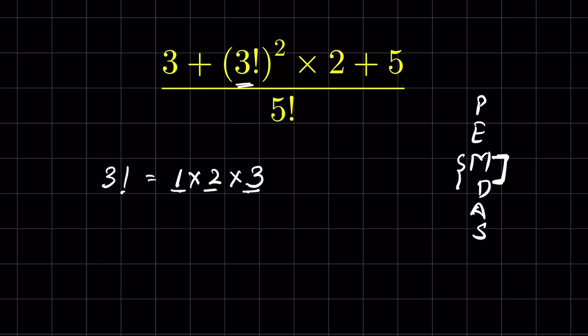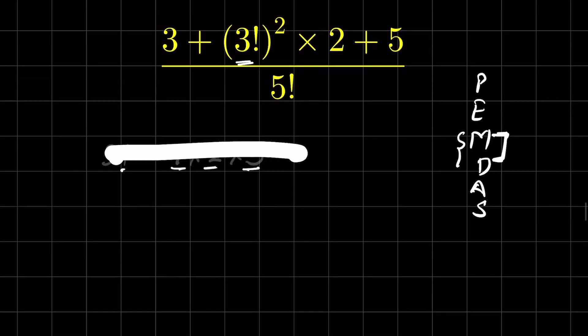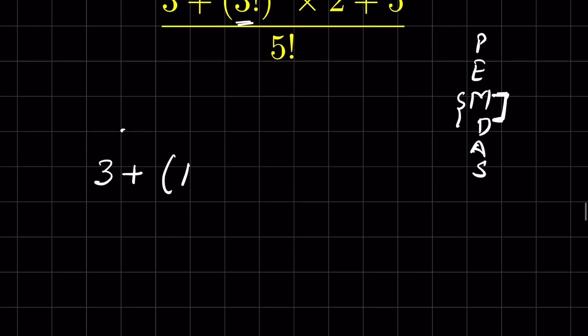Here it will be 3 plus 1 times 2 times 3 raised to the power of 2, then times 2 plus 5 upon 5 factorial, which means 1 times 2 times 3 times 4 times 5, the product of all the positive integers till 5.